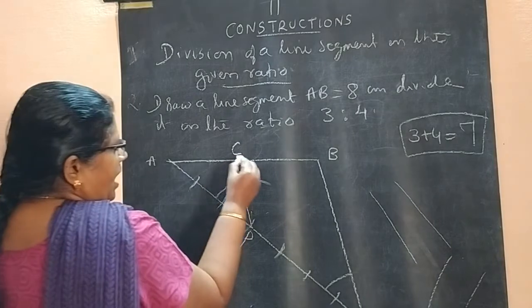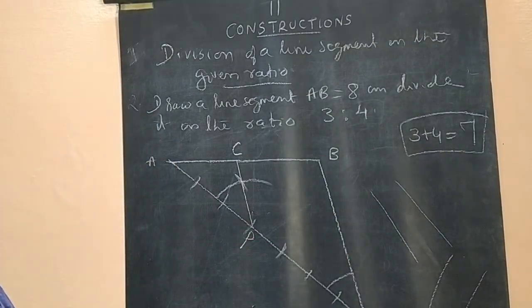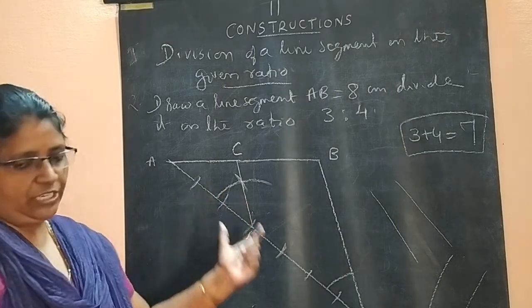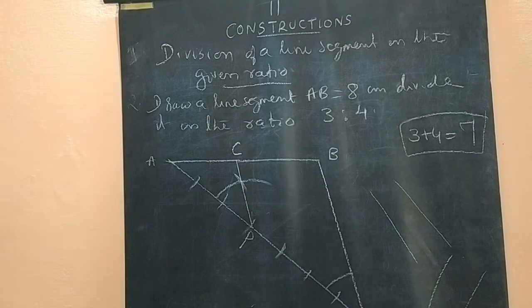Now this length and this length will be in the ratio of 3 to 4. It is the second type of construction. So both you have to study. Now we did the two questions in two ways.